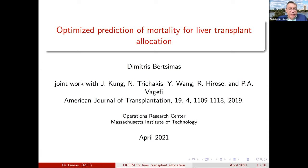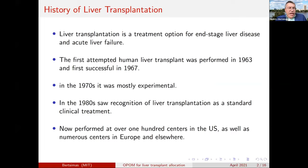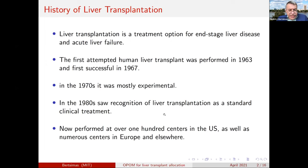Significant issues of equity and efficiency enter the story. Liver transplantation is a treatment option for end-stage liver disease and acute liver failure. It was first attempted in the early 1960s and the first successful liver transplantation happened in 1967. In the 1970s it was mostly experimental, but in the 1990s it was increasingly utilized, and now it is performed at over 100 centers in the United States as well as numerous centers in Europe and elsewhere.